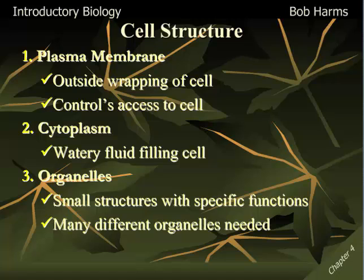One big difference, though, with these organelles is cells may have thousands upon thousands of organelles — many more than organs that you would find in your body. So we're going to start off today looking at this plasma membrane, our outside wrapping, and then we'll move on and talk about the different organelles we might find in cells as well.